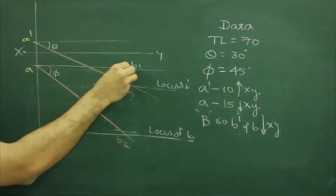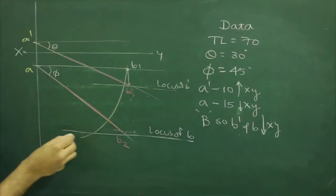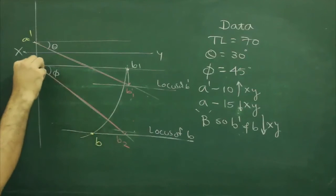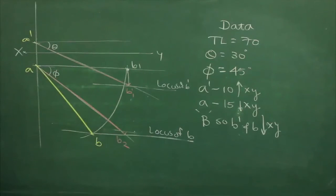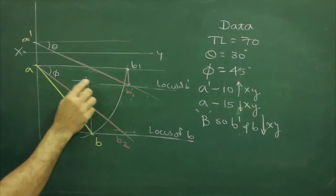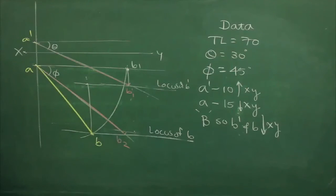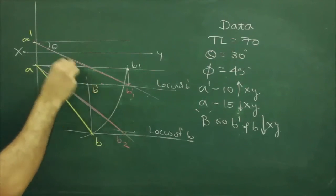Then we will take a to b1 and rotate. Wherever I cut, that would be point b. From a to b, project this line straight upward. Wherever it intersects with the locus of b dash, that point would be b dash.